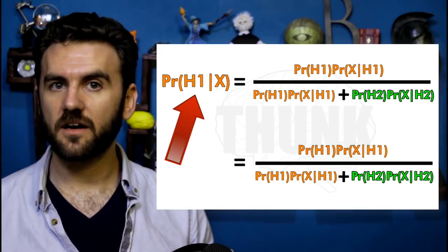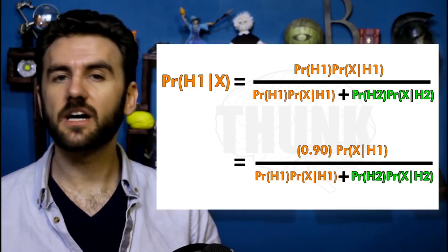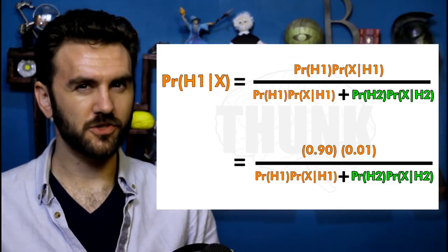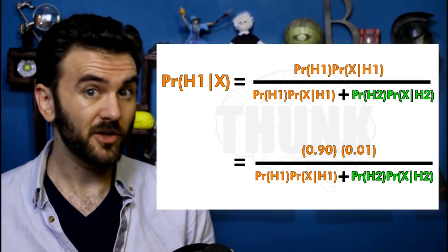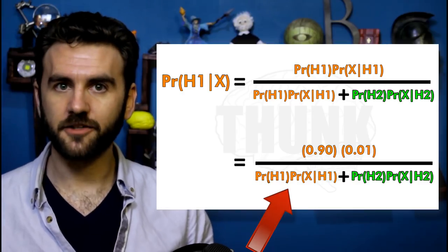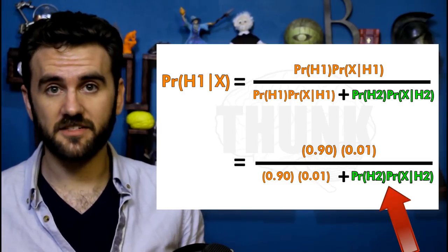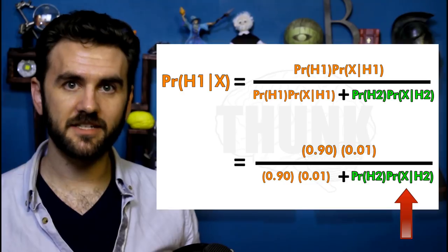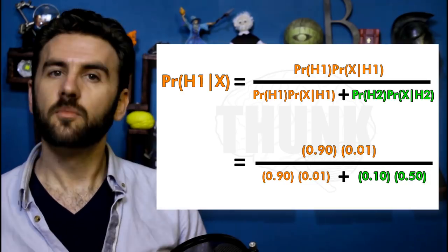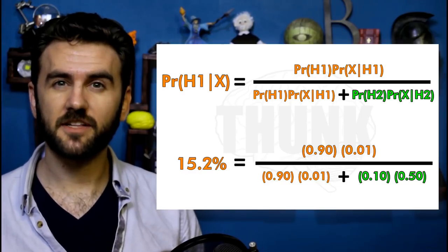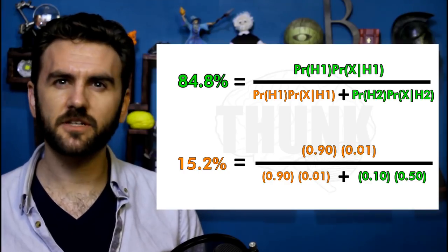In this case, the updated odds that the restaurant is still good are 90% — which is what we believed before — times 1%, that 1 in 100 chance that some weird series of events could result in a crappy meal even at a good restaurant, divided by those values for hypothesis 1 (90% × 1%), plus the same values for hypothesis 2 — the prior times the conditional probability, or 10% × 50%. Plug and chug, and you get a 15.2% chance that the restaurant is actually still okay, and an 86.8% chance that something is seriously wrong.